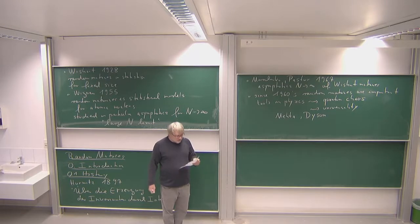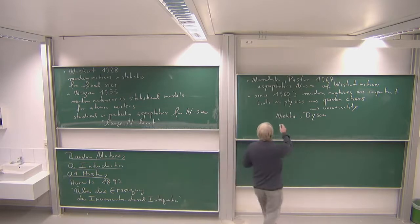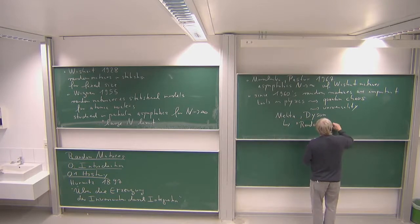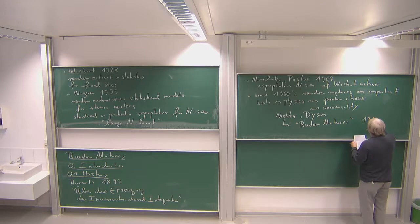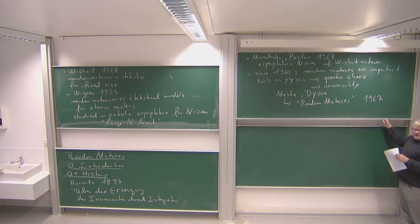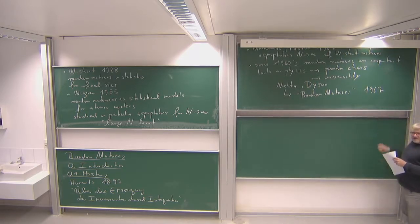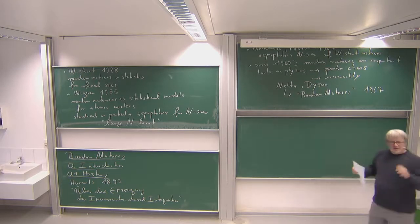Apart from Wigner, the two main names in this context were Mehta and Dyson. In particular Mehta wrote the first book on random matrices, which became very popular and was maybe the only book for a very long time. Mehta's book is called «Random Matrices» and the first edition is from 1967. It was very influential, particularly in physics.